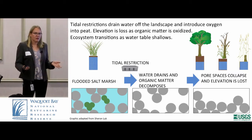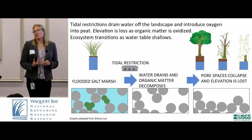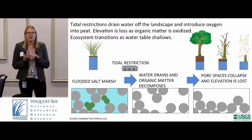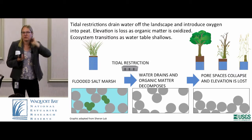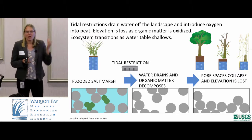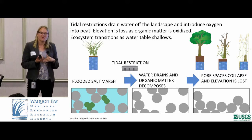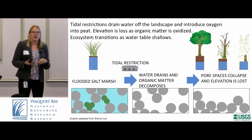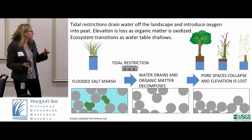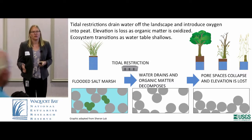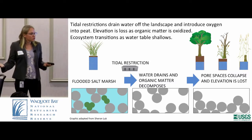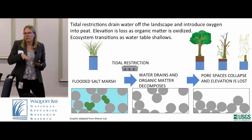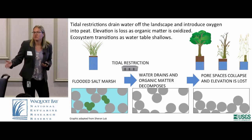Carbon storage and carbon processes are very intricately linked to the ability of these environments to build elevation, because a lot of what they're building is organic material. Building elevation is really key because these ecosystems are at the coast, and right now one of the threats we face is sea level rise. What I want to go over are the elevation histories in this region and the implications of those histories in terms of carbon dynamics and future resilience.